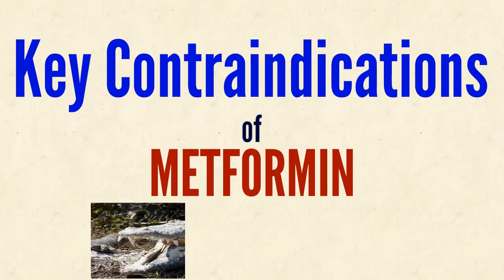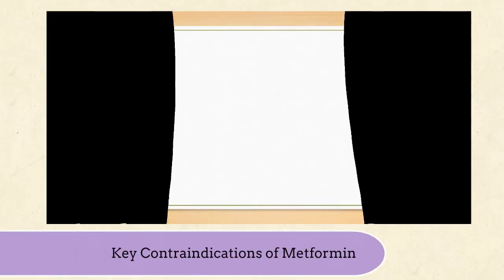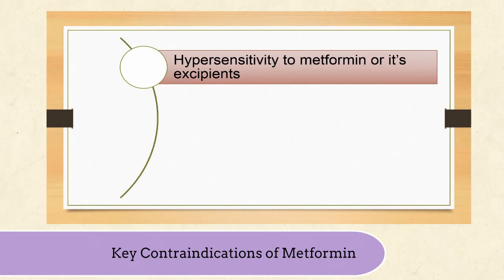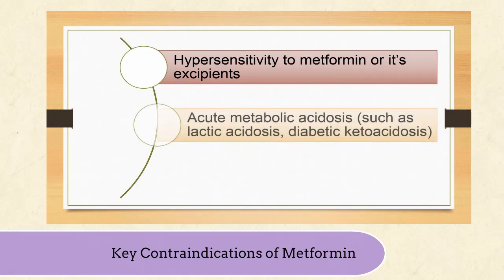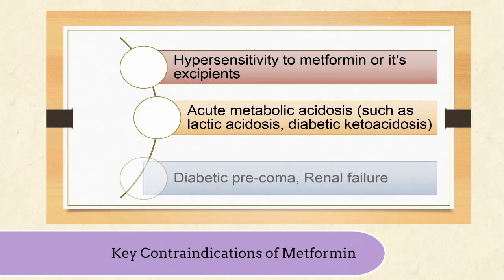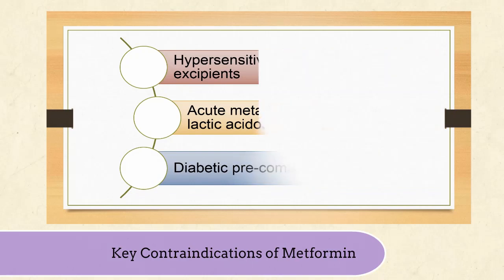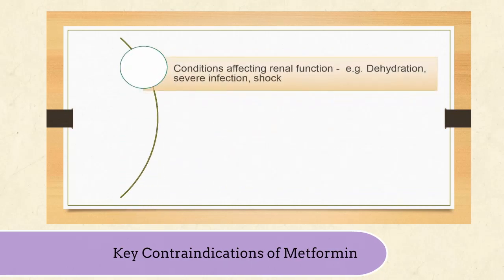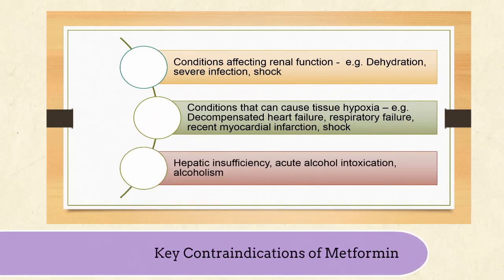Let's look at some of the key contraindications of metformin. These include hypersensitivity to metformin or its excipients, acute metabolic acidosis such as lactic acidosis, diabetic ketoacidosis, diabetic pre-coma, renal failure, and conditions affecting renal function such as dehydration, severe infection, and shock.